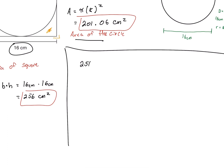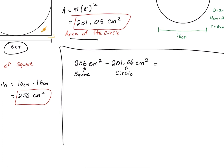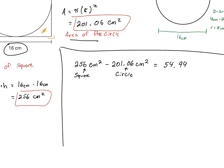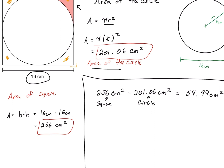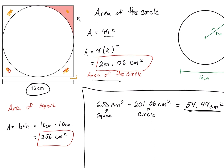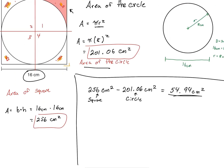We're going to do area of the square, 256 centimeters squared, minus the area of the circle, 201.06 centimeters squared, and this equals 54.94 centimeters squared. But we have a problem — this is the total area of all the outside sections. We just want one corner region. Since a square can be divided into four even pieces, we take our total area and divide by four. So 54.94 times one quarter gives us 13.73 centimeters squared, which is the area of the shaded region.